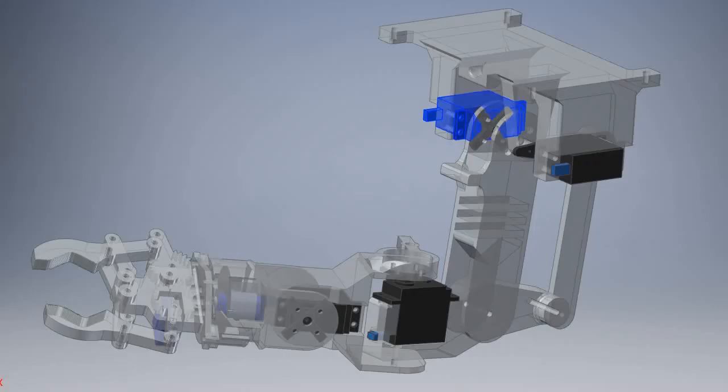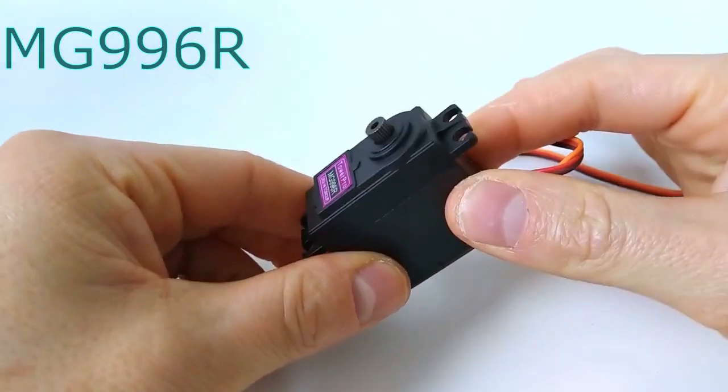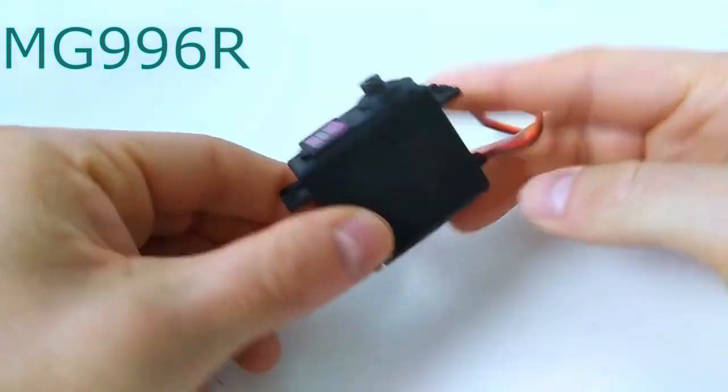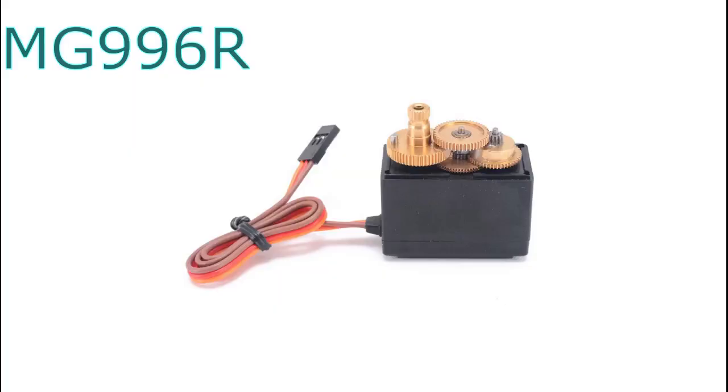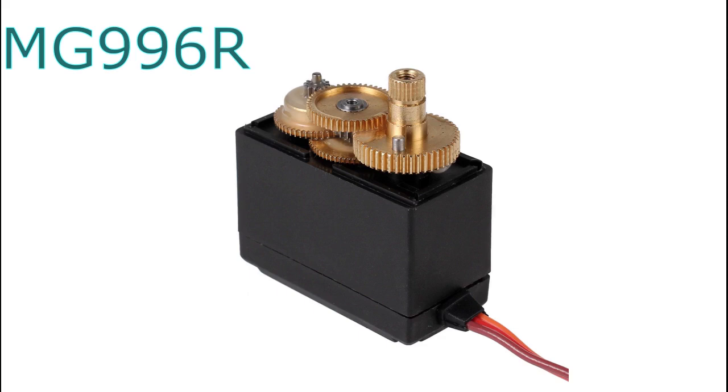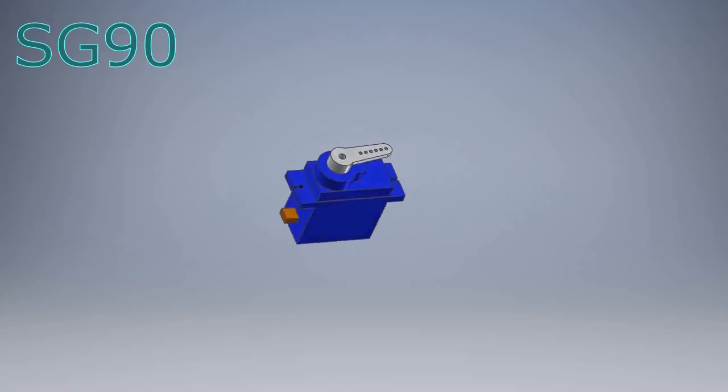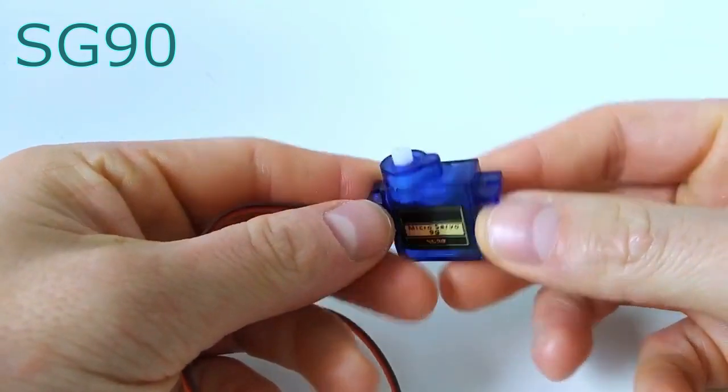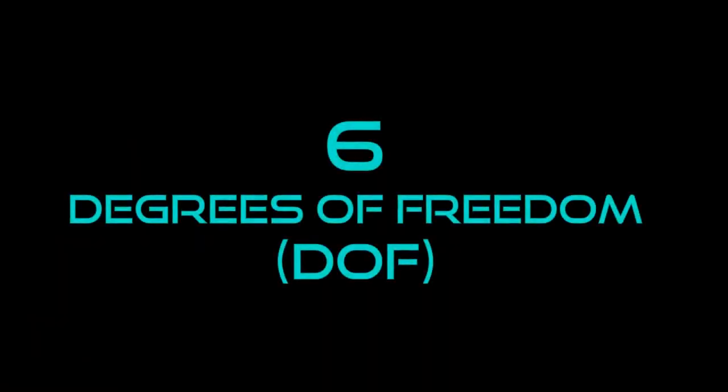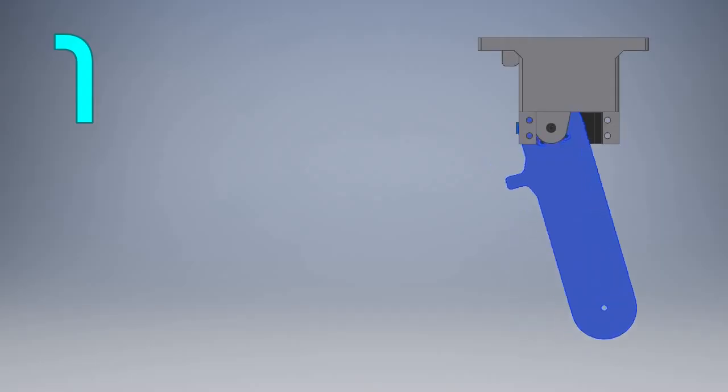It has a total of 6 servos. The large ones are the common MG996R, which I chose for their strong metal gearing and reliability. The small ones are the SG90 microservos, which uses all plastic gears.